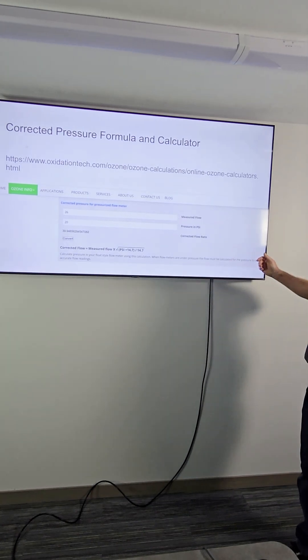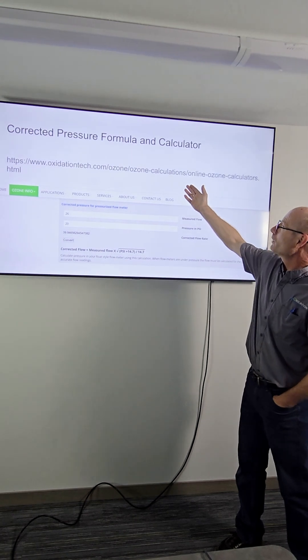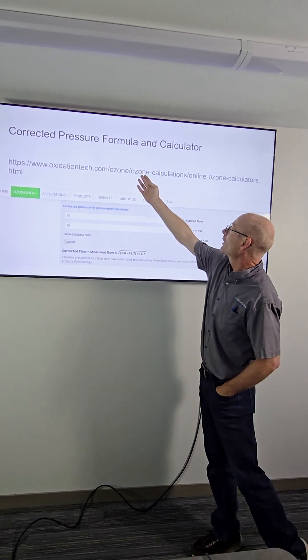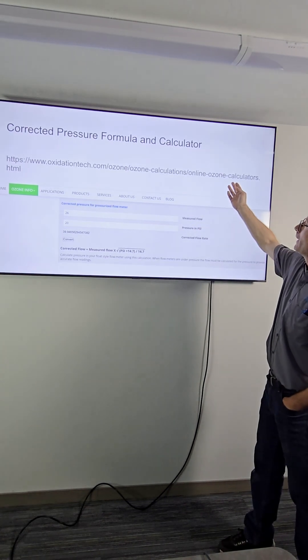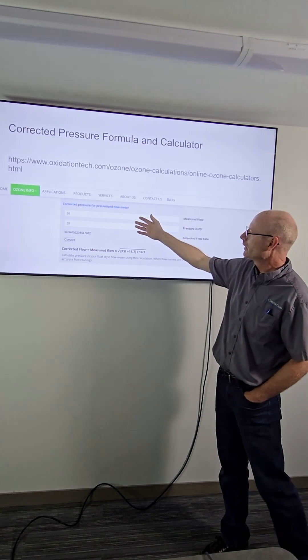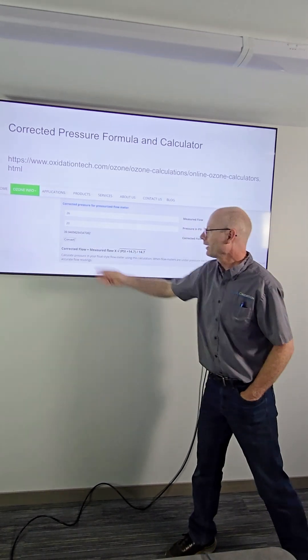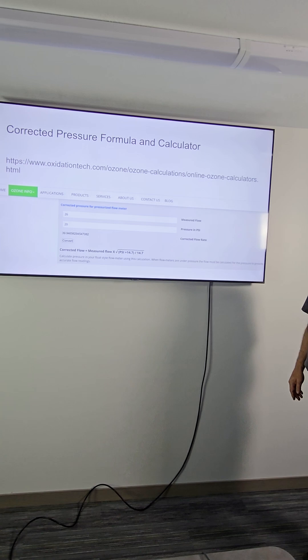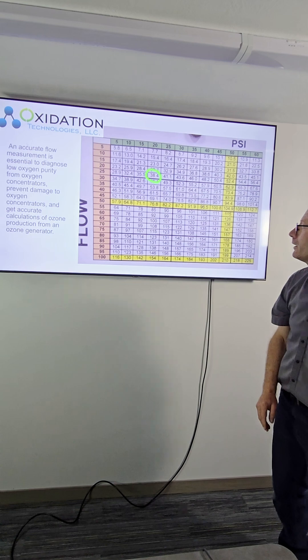We've got the same formula on our website. You go to my website under ozone calculations and you'll find a calculator here. You put in your measured flow and pressure and it'll calculate it for you and doing that it is very important to know exactly what the flow is.